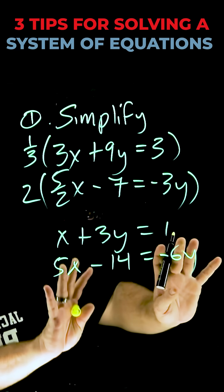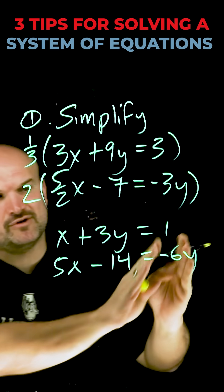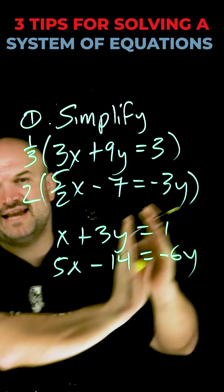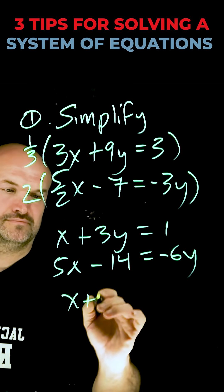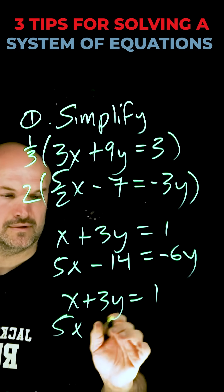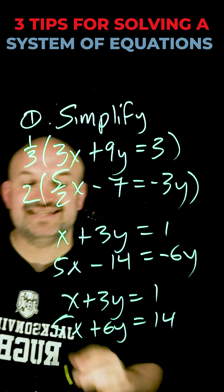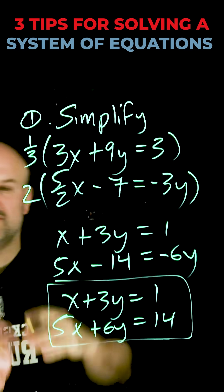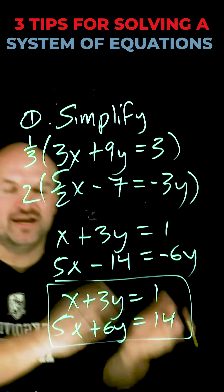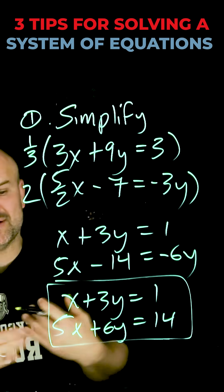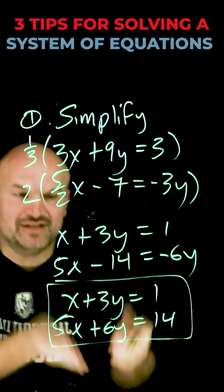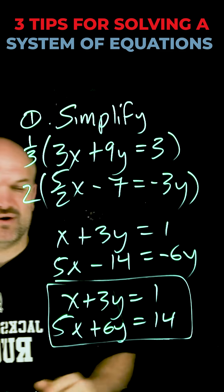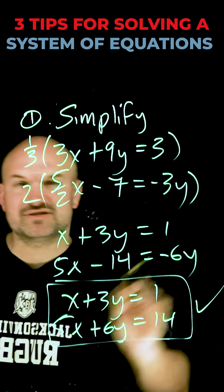So I went ahead and simplified, and now if I rearrange this, I'll add 6y and then add 14 over to the other side. Now I have a much easier equation to solve using either substitution or my preference, elimination, to solve this system of equations. So always go ahead and simplify first.